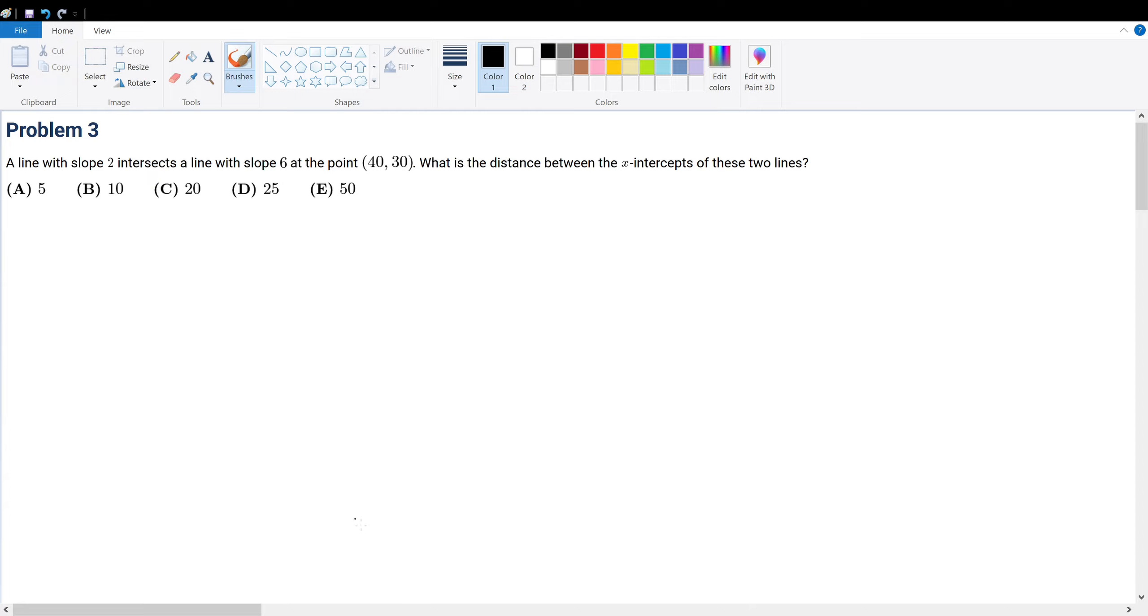Problem 3: A line with slope 2 intersects a line with slope 6 at the point (40, 30). What is the distance between the x-intercepts of the two lines?